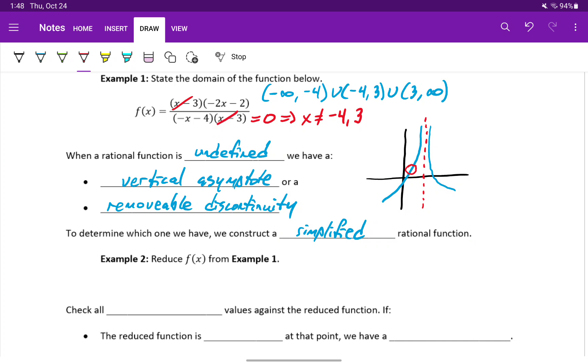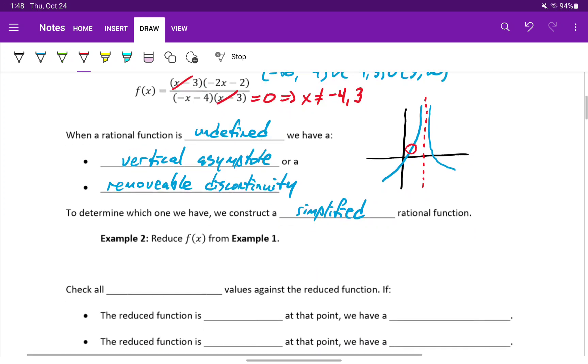In this case, x minus three over x minus three would cancel, leaving us with a new simplified or reduced function that just for ease of reference we'll call g of x. And that's going to be equal to negative two x minus two, all over negative x minus four.